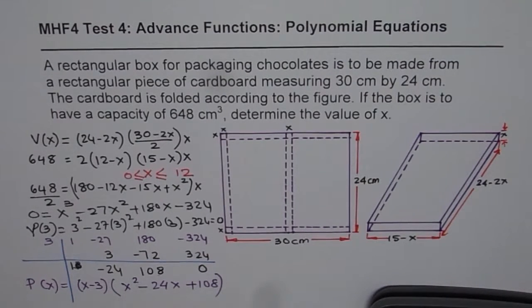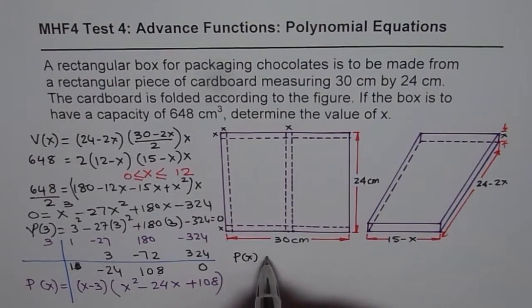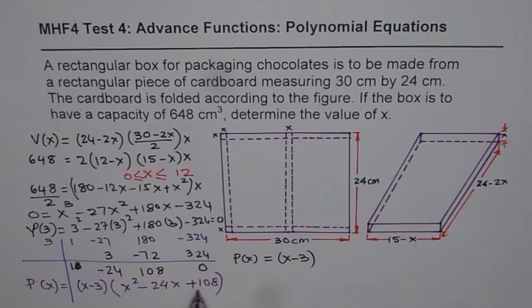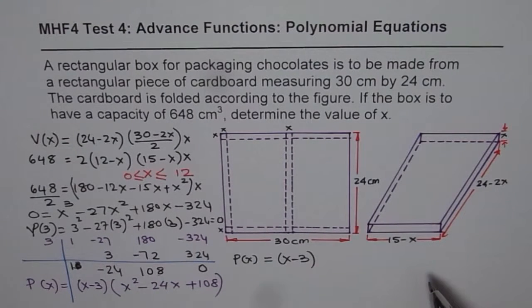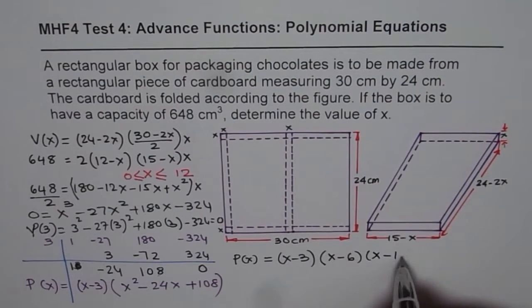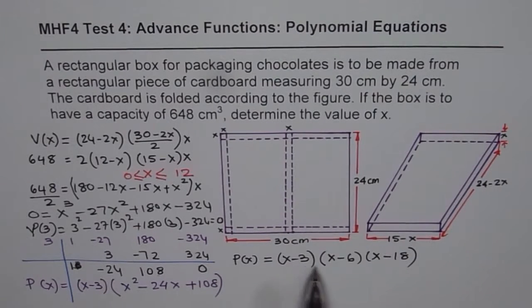So what I will do here is that I will write down the factoring of this right here. So let me just move on to this place. So we already have x minus 3. Try to find product of two numbers which is 108 and sum as minus 24. Minus 24 as the sum and product as 108. So you can try many numbers. What you will get is 6 and 18. So you can factor this as x minus 6 and x minus 18.